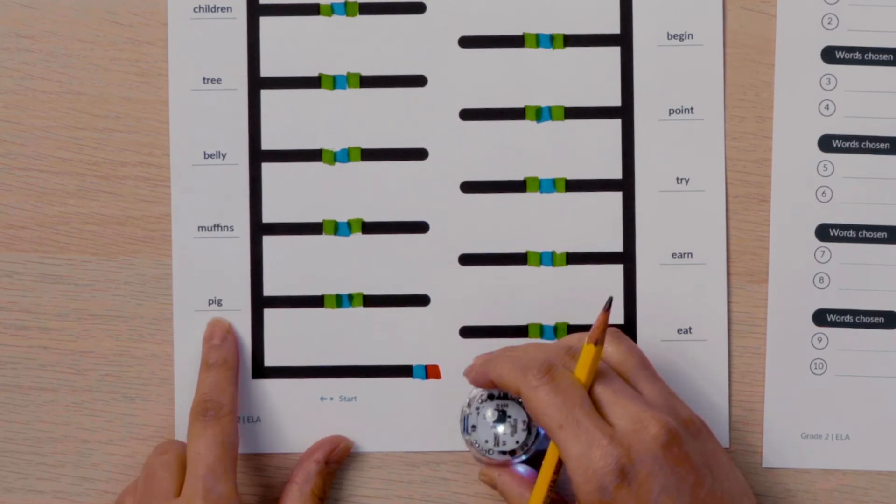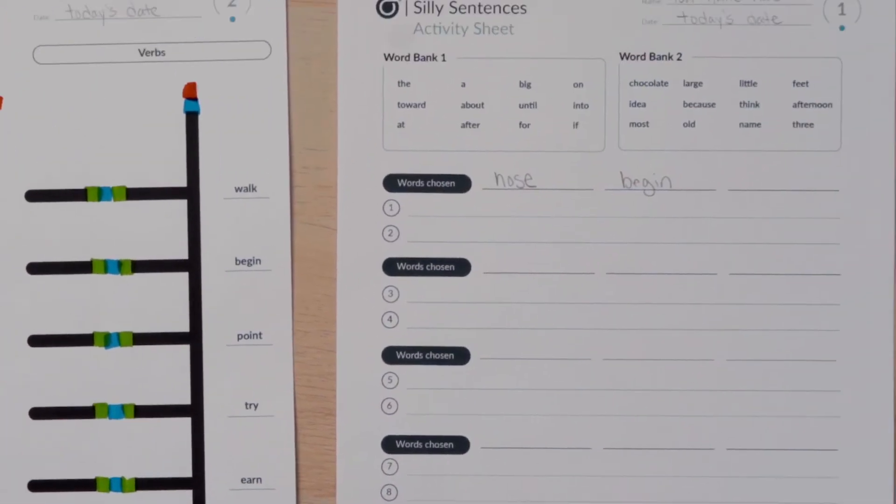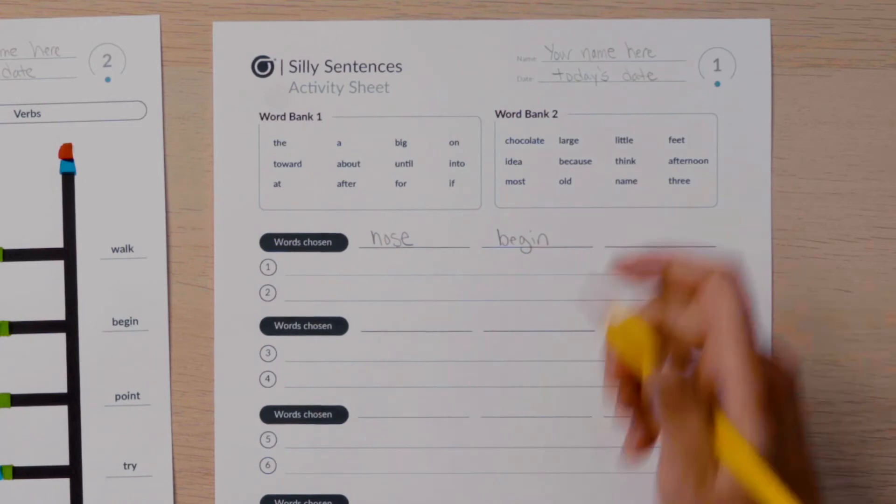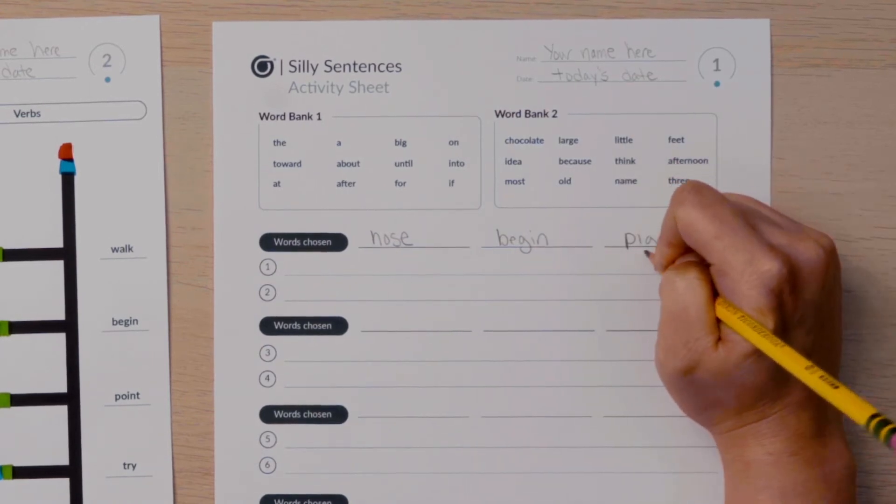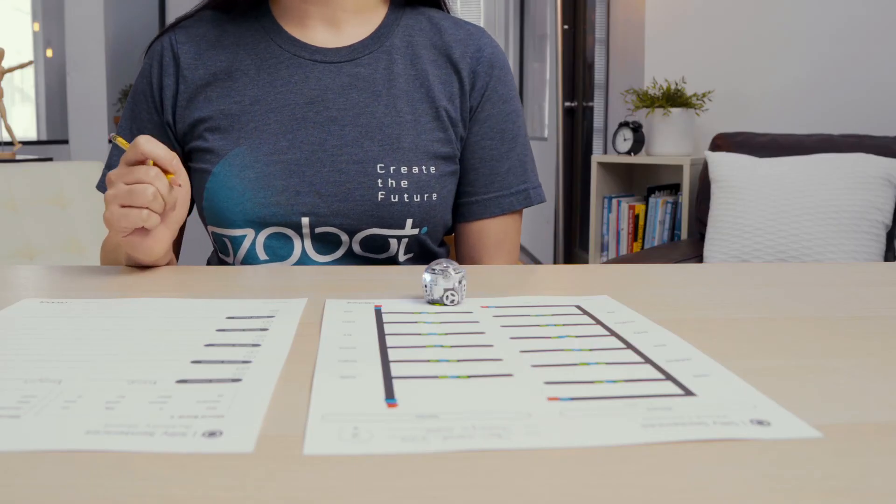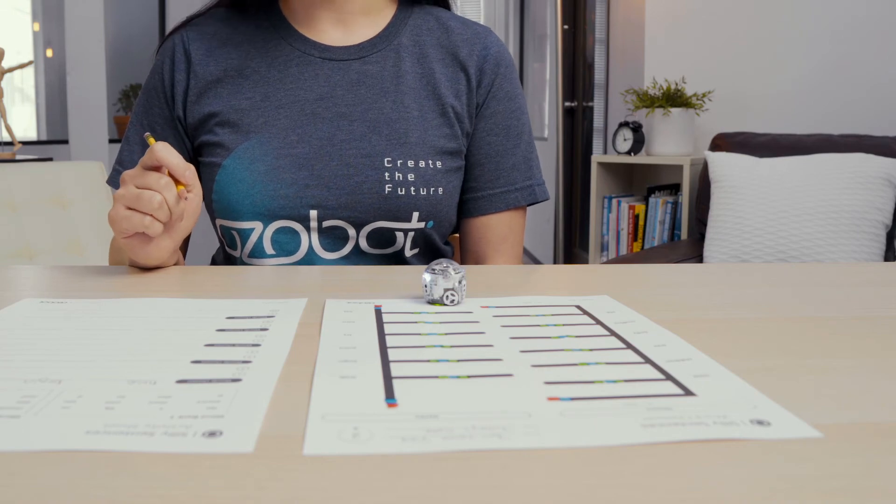My bot chose pig. I'll write the noun on the last line next to the other two words. Now that my Ozobot has chosen two nouns and a verb, I'll pick up my bot.